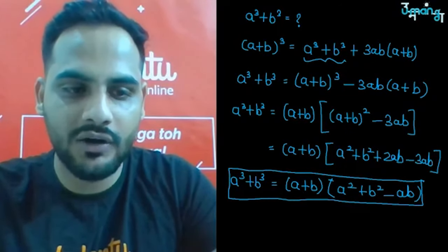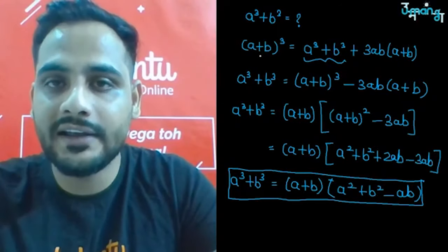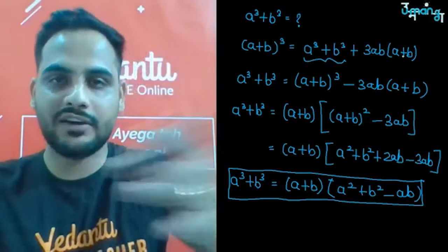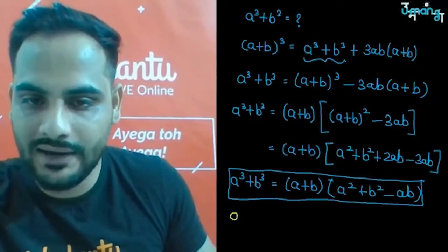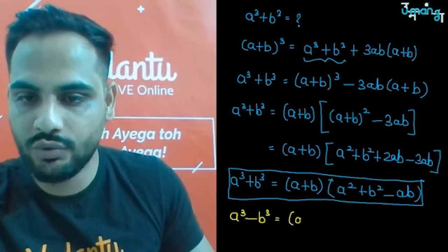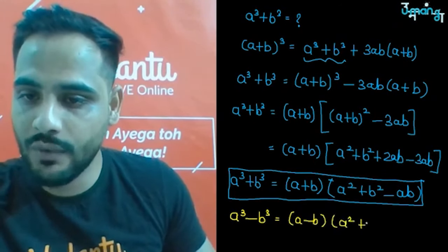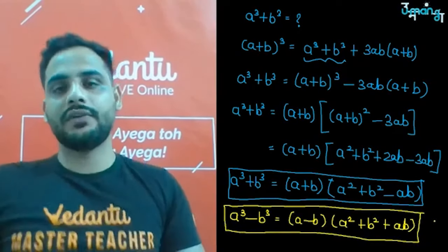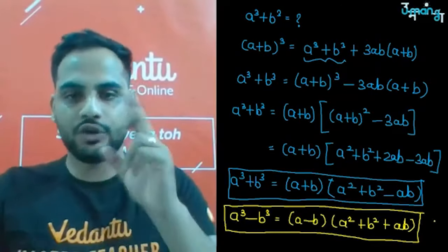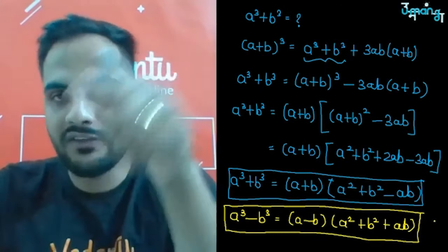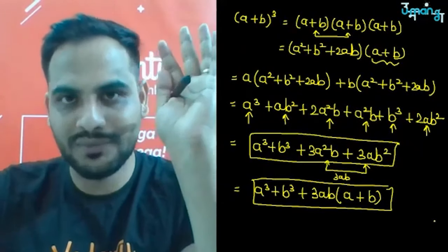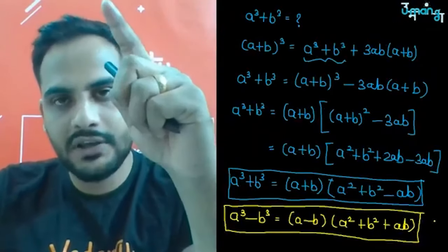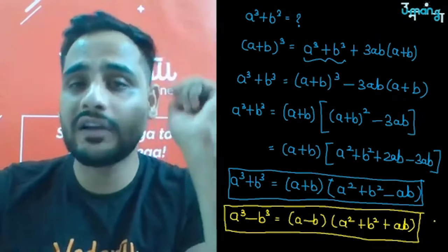Similarly, a³-b³ is derived from (a-b)³ = a³-b³-3ab(a-b). Shifting: a³-b³ = (a-b)³ + 3ab(a-b) = (a-b)[(a-b)²+3ab] = (a-b)(a²+b²+ab). So a³-b³ = (a-b)(a²+b²+ab). These are your four cubic identities: (a+b)³, (a-b)³, a³+b³, and a³-b³.